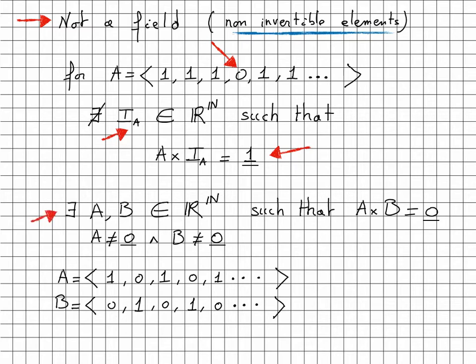In fact, there are many elements A and B different from 0 but such that the product AB gives us a constant sequence 0. For example, here.